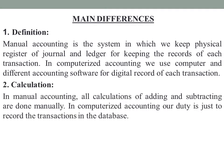Next is calculation. In manual accounting, all calculations of adding and subtracting are done manually — we need to do all calculations by hand. Whereas in computerized accounting, our duty is just to record the transactions in the database; the software handles all the calculations automatically.